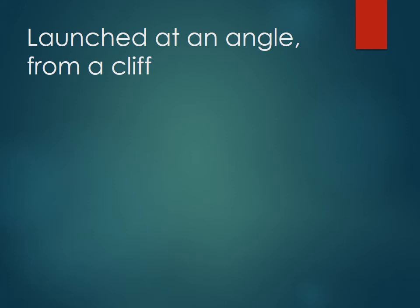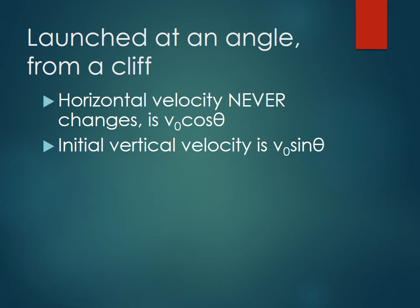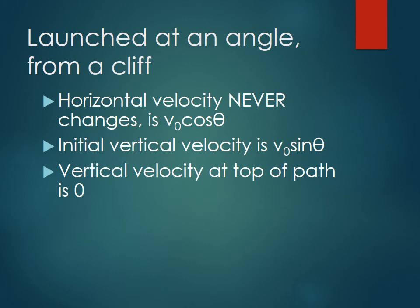The third and final variation is launched at an angle from a cliff or some other initial height. Again, the horizontal velocity never changes and it's still the horizontal component of the initial velocity, still v0 cosine theta. The initial vertical velocity is again v0 sine theta, the vertical component of your initial velocity. The vertical velocity at the top of the path is still zero, just like an object in free fall.